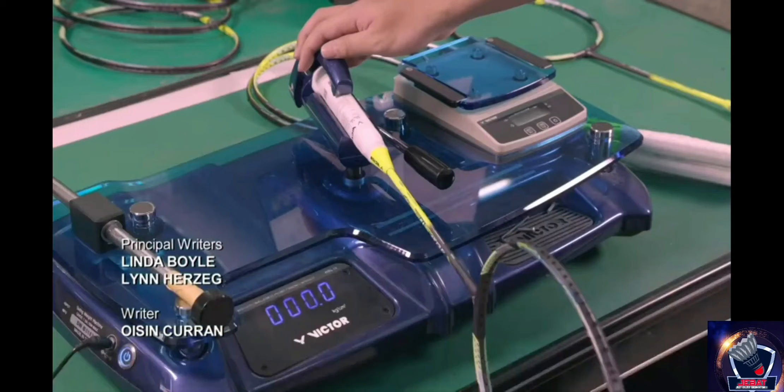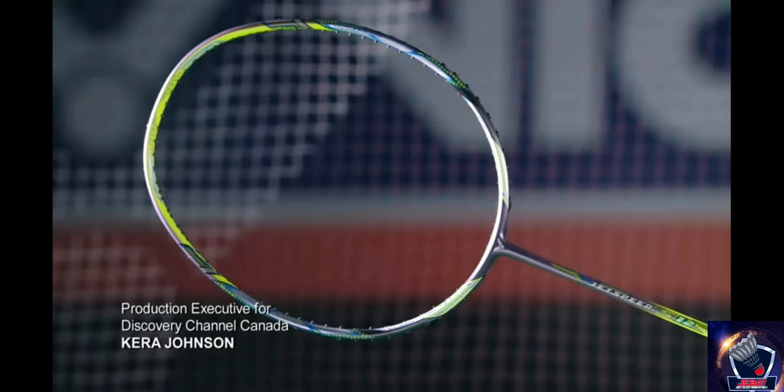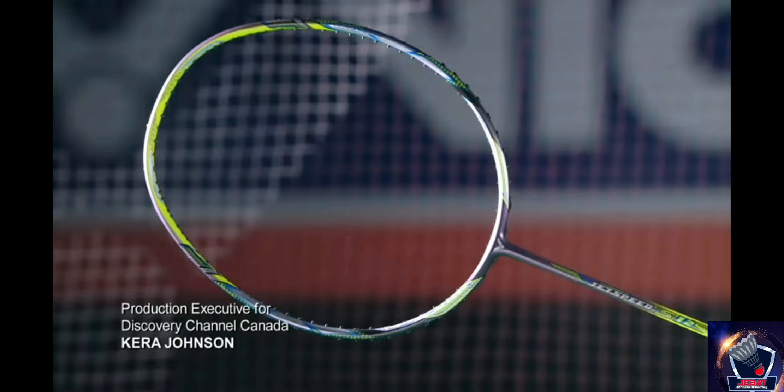A quality control inspector clamps the completed racket into a precision-engineered device designed to measure its weight, swing weight, and balance point with incredible accuracy. The rackets made by this manufacturer come in different sizes suited to every level of badminton player.